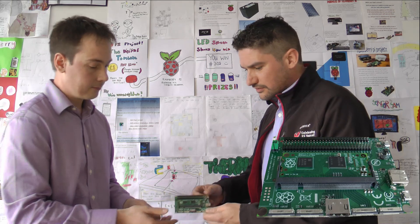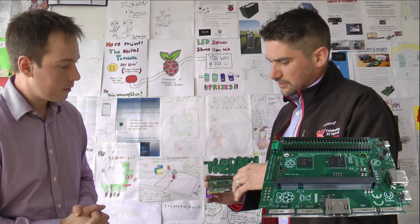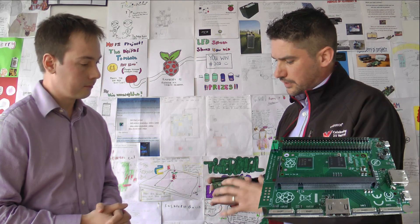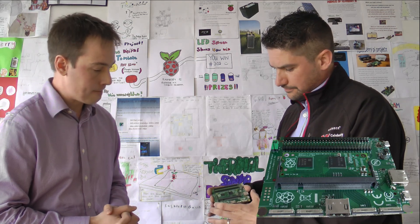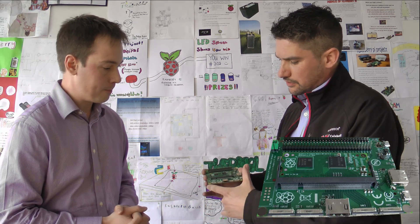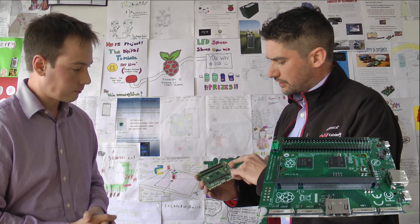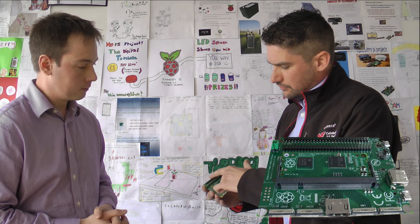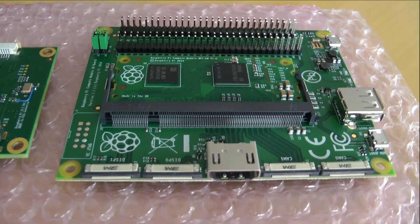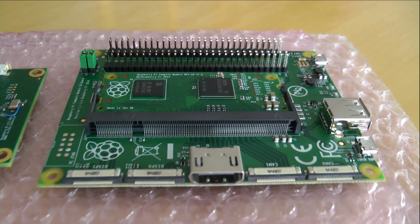So you've pretty much taken the connectors and everything that was on the original Raspberry, reduced the size slightly, and then made an I.O. board that has got USB, HDMI, power, and range of connectors, but you're saying this I.O. board could be pretty much anything that anyone wanted to design?